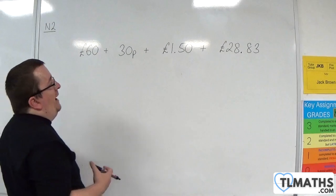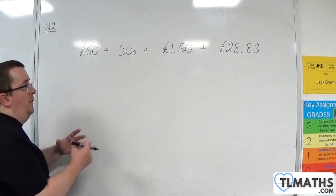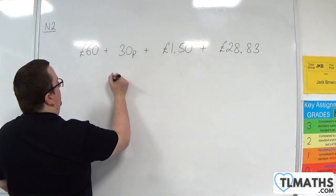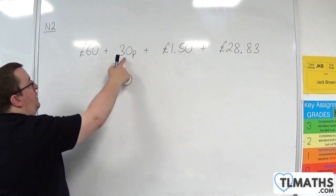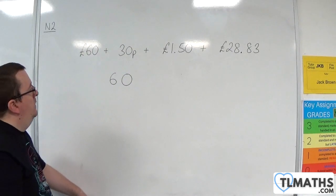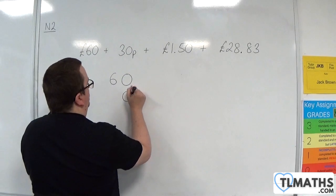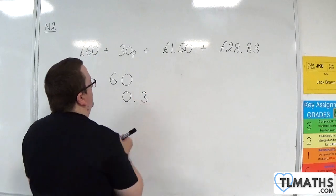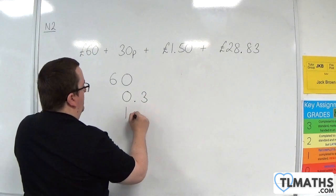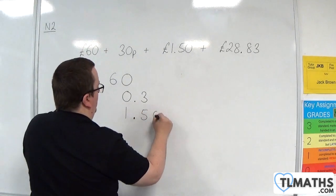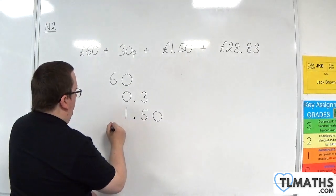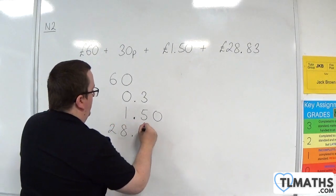If I was asked to add up those amounts, I would make sure that I've got them in a list. So £60.00, then £0.30, then £1.50, and then £28.83, making sure the decimal points are aligned.